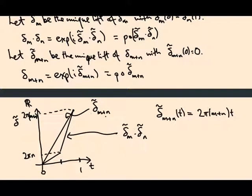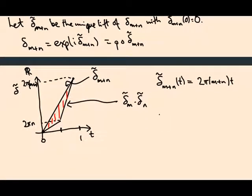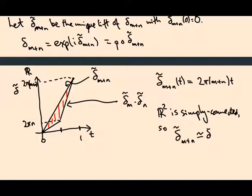And now the claim is these paths are clearly homotopic. Right, they have endpoints fixed, same endpoints here and here. And in the plane they're just homotopic. Vertically homotope this piecewise linear guy to this fully linear guy. So R2 is simply connected. So delta tilde m plus n is homotopic to delta tilde n dot delta tilde m. And that tells us just by now composing with p that these two guys are homotopic. And this is delta m plus n. And this is the concatenation.